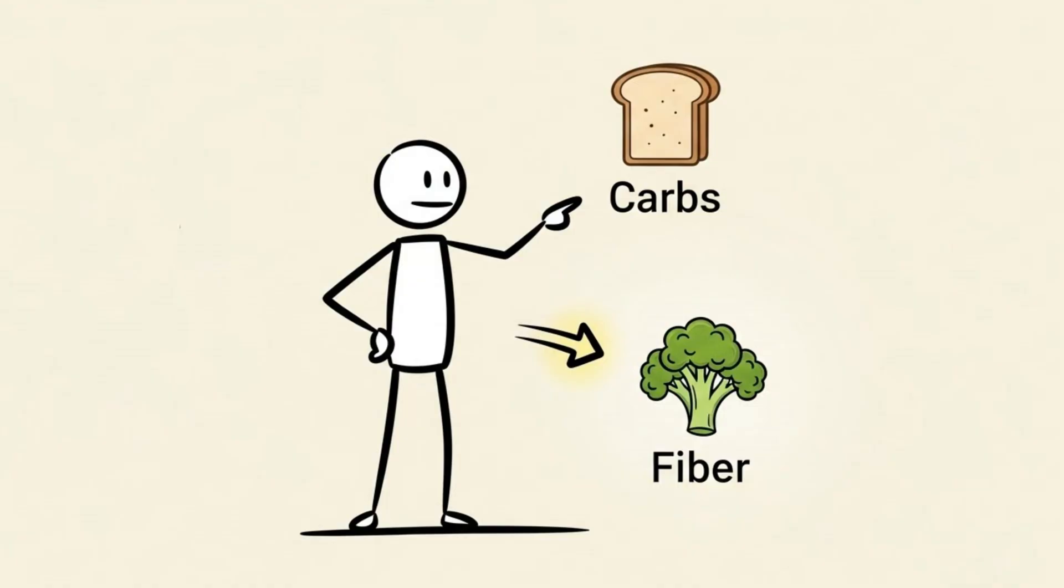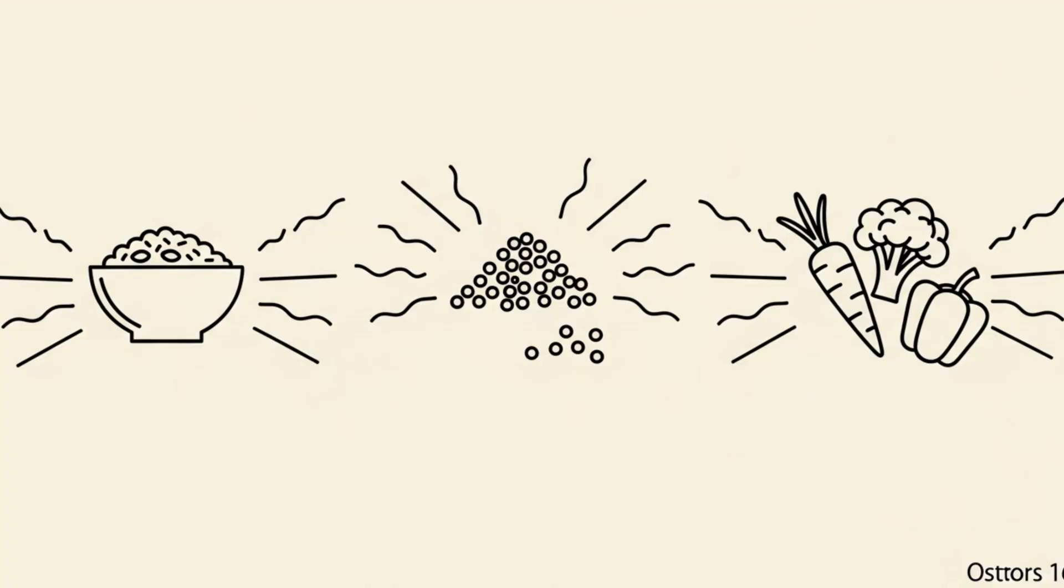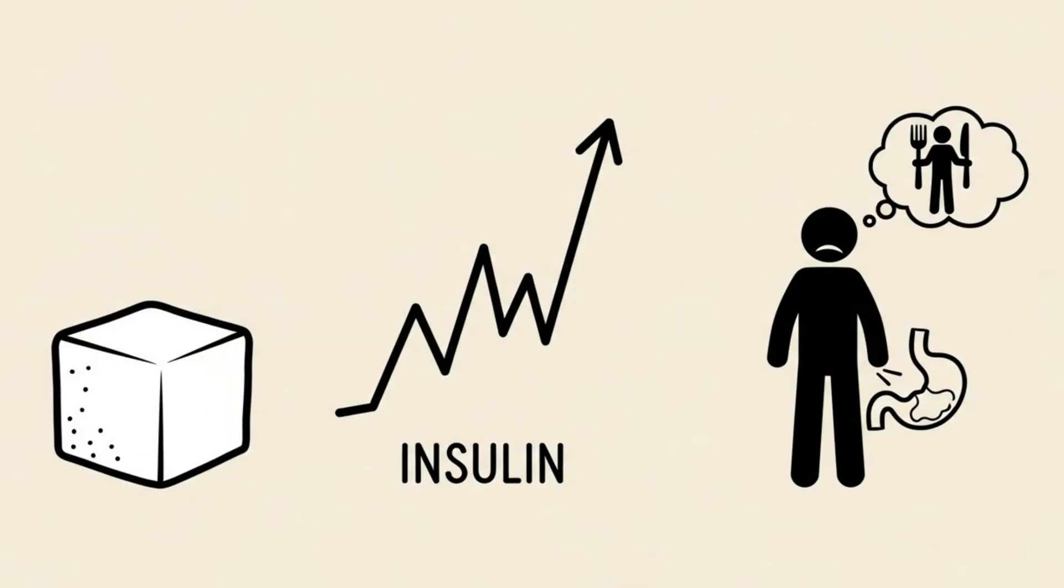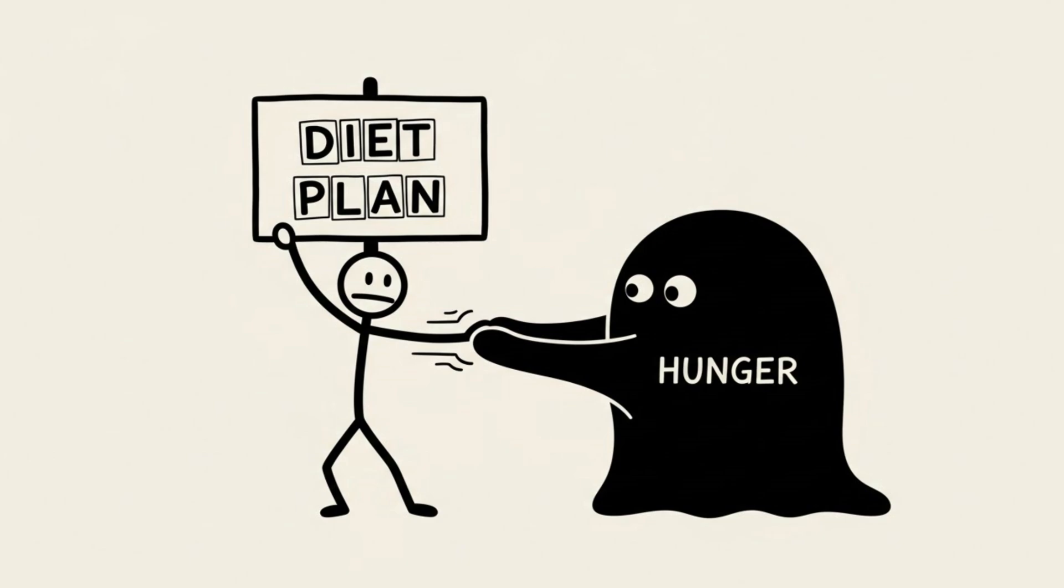For carbs, focus on fiber. Complex carbs like oats, quinoa, and vegetables provide sustained energy. Simple sugars spike your insulin and leave you hungry an hour later. It's not that sugar stops fat loss, but it makes adhering to the diet significantly harder because of the hunger swings.